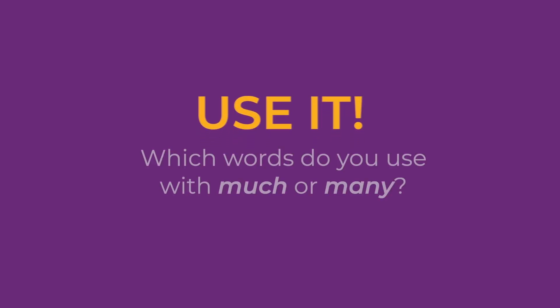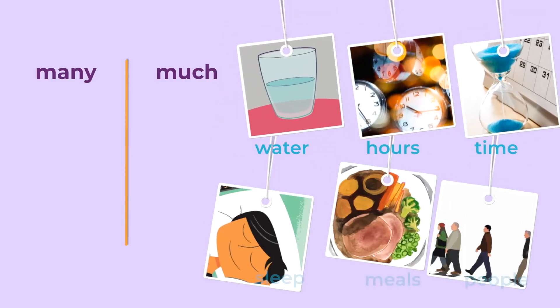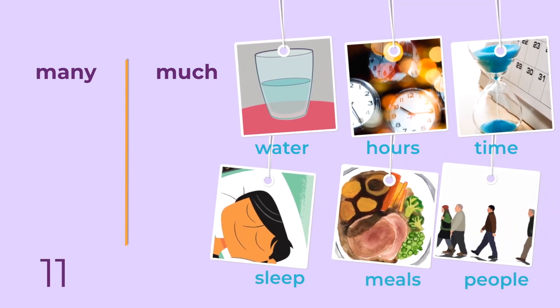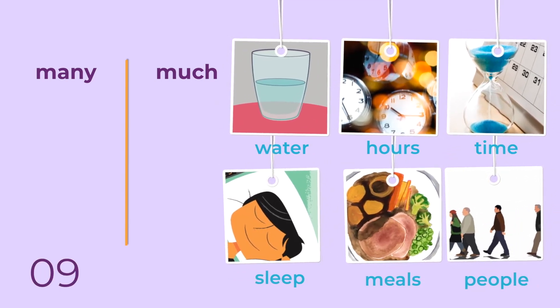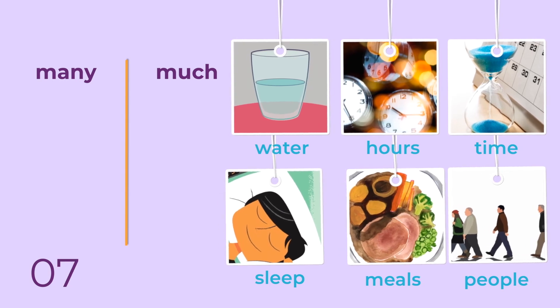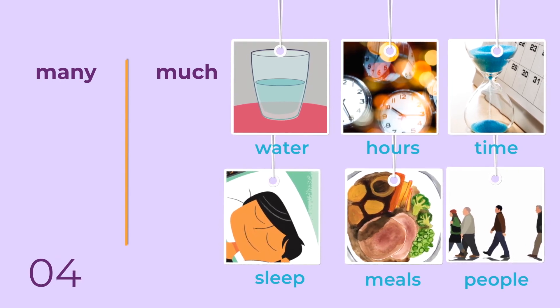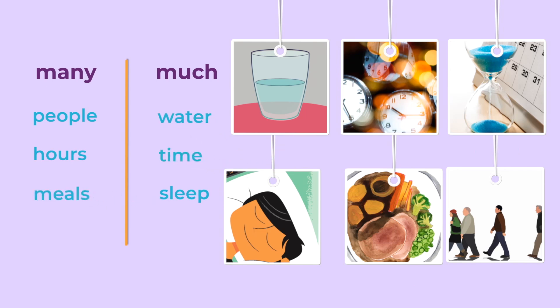Use it. Which words do you use with 'much' or 'many'? Many: people, hours, meals. Much: water, time, sleep.